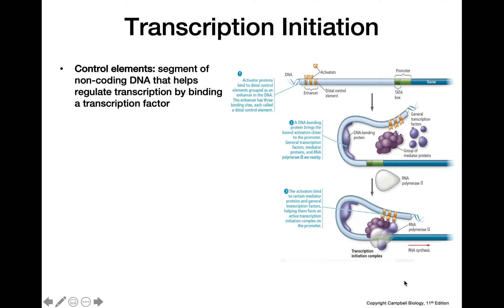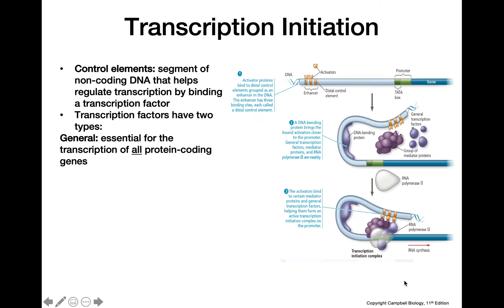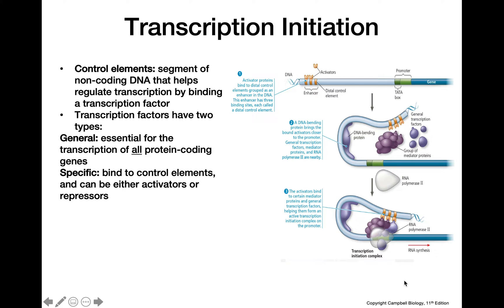Control elements are a segment of non-coding DNA that help regulate transcription by binding to particular transcription factors. Transcription factors come in two different forms. General transcription factors are necessary for transcription of all protein-coding genes — they're always involved regardless of what the gene product may be. Specific transcription factors bind to control elements and act as either activators or repressors.